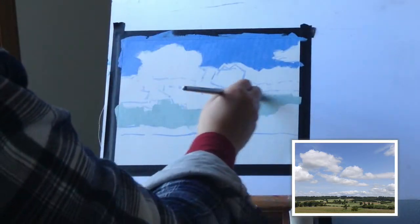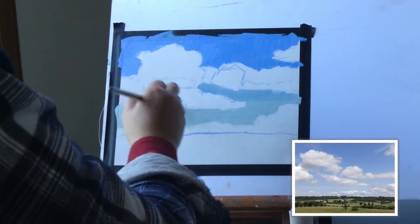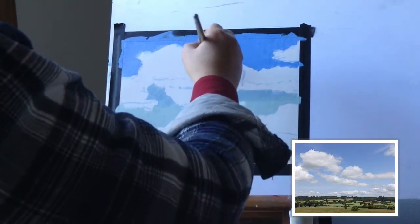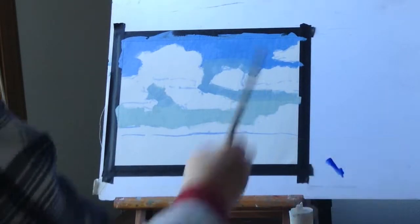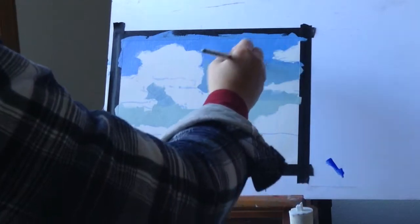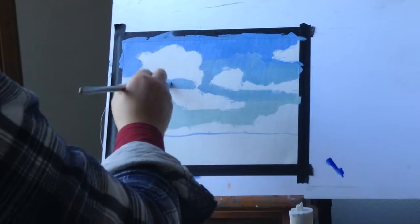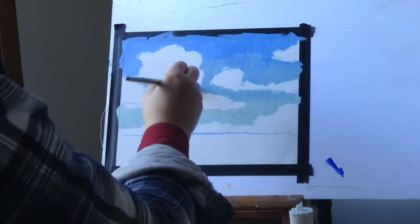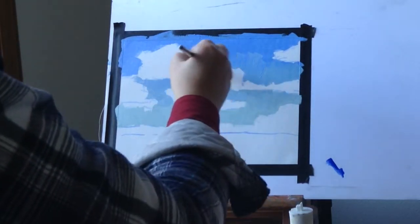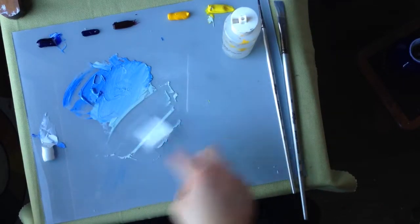This is kind of an easy way to get that in between color, is just to mix the two piles together a little bit. Okay, I have gotten the sky color blocked in pretty much. So now I am just kind of smoothing out the gradation a bit.